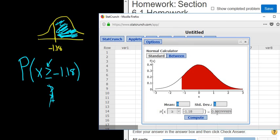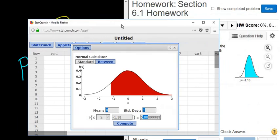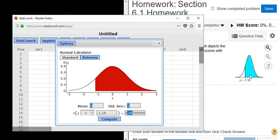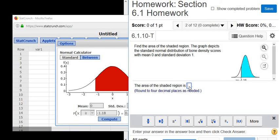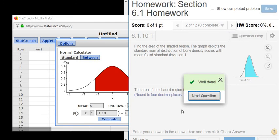Click Compute, and there it is. So it wants four decimals, so 0.8810. Notice it matches the picture, too, so you can check your answer by just making sure that it matches the picture. So 0.8810. So I'm going to type it in, 0.8810. Click Check Answer, and that's it.